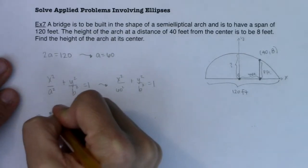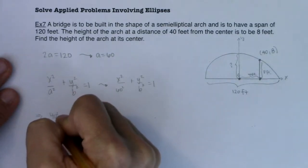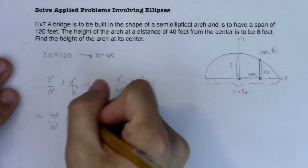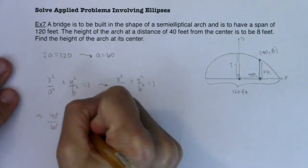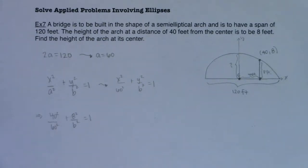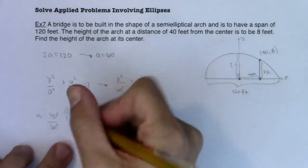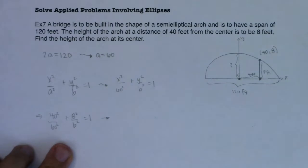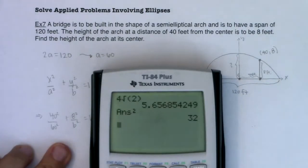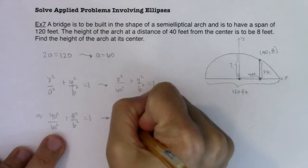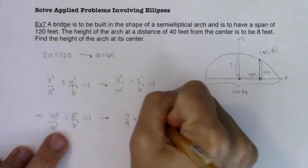At this point we know 40 squared over 60 squared plus 8 squared over b squared is equal to 1, and now you can see that the only thing left is b squared. Let's start trying to work this. If I do 40 over 60 quantity squared, let's see what that would give us. So we will do 40 squared divided by 60 squared. If I math frack that, that's 4 ninths. So I have 4 ninths plus 64 over b squared is equal to 1.